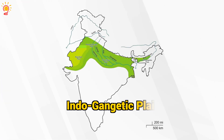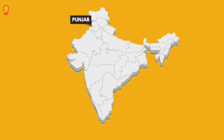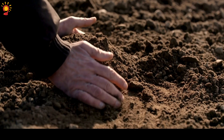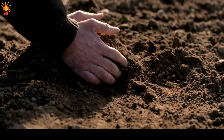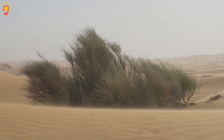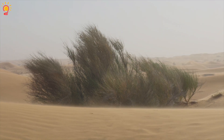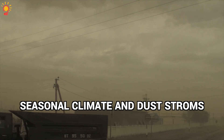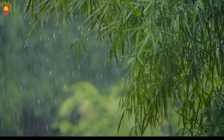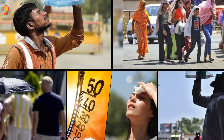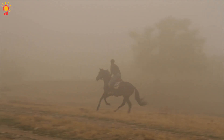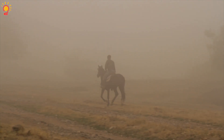The Indo-Gangetic Plain, which covers Punjab, Haryana, Uttar Pradesh, Bihar, and West Bengal, has fine alluvial soil that can easily become airborne due to strong winds. Seasonal climate and dust storms: pre-monsoon periods from March to June bring intense heat waves and strong winds, lifting dry soil into the air.